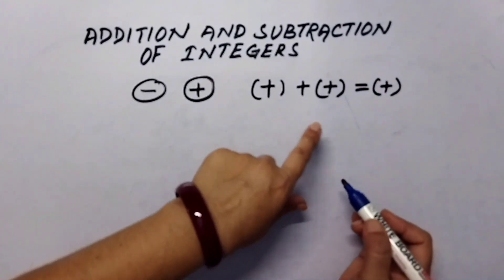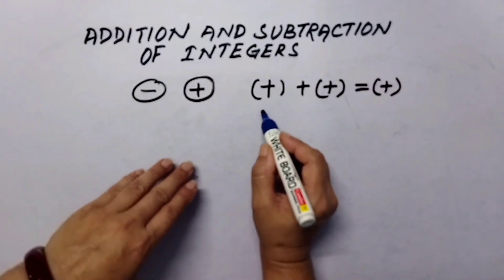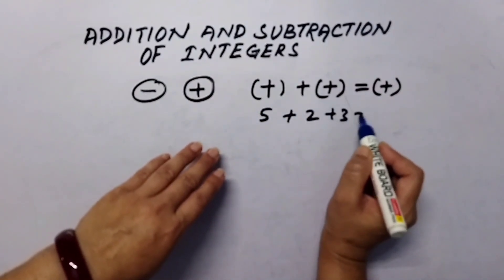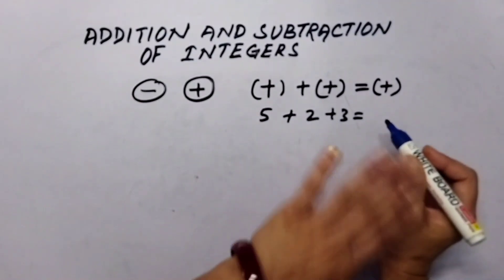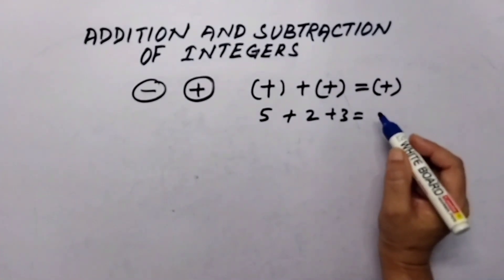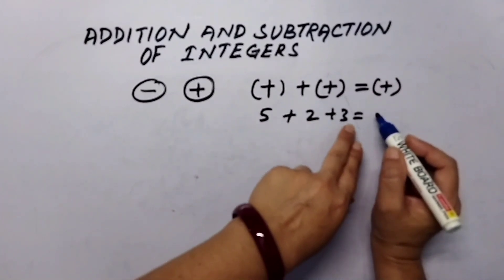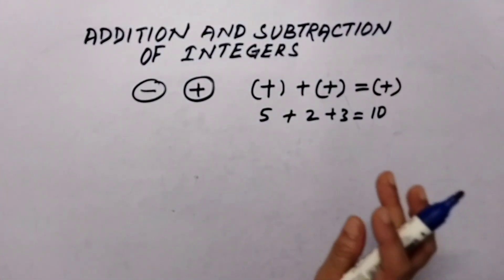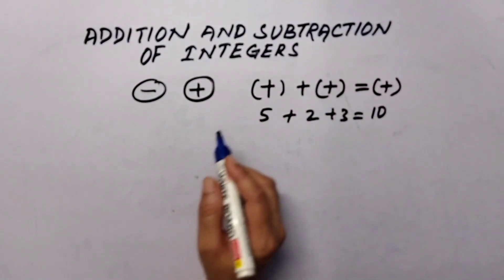Positive integers are nothing but natural numbers. When we add five plus two, or plus three, or as many positive integers as we like, we get one positive integer — just like when adding natural numbers: five plus two is seven, plus three is ten. So there is no need to be confused when adding two or more positive integers.